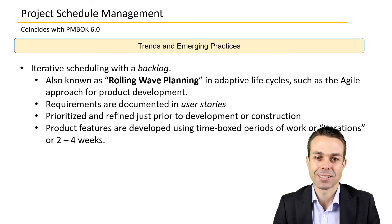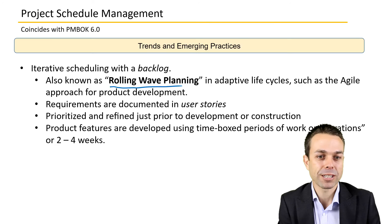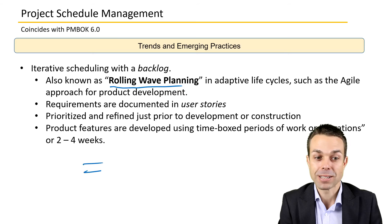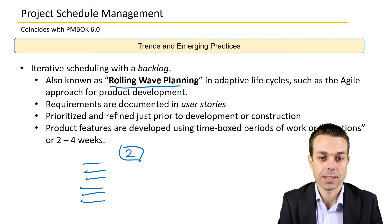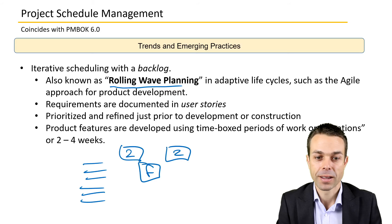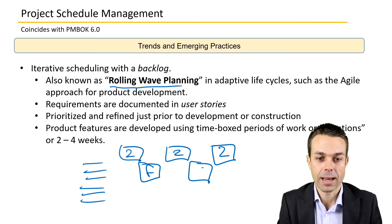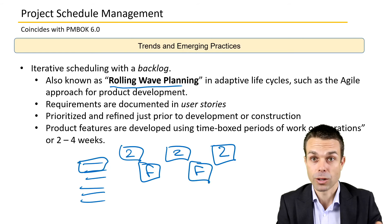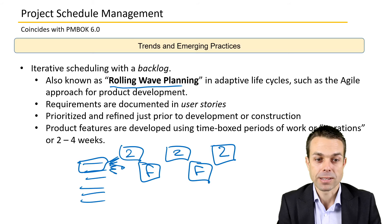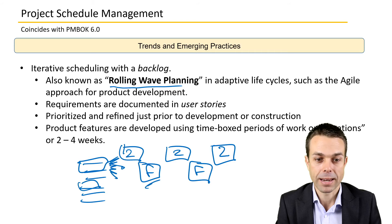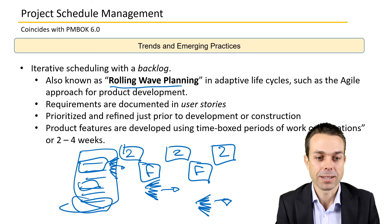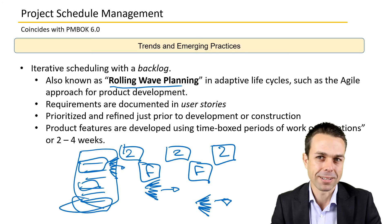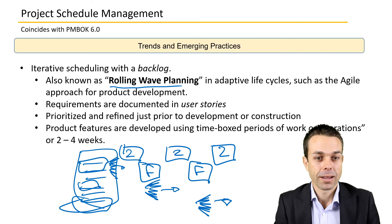Trends and emerging practices include rolling wave planning — iterative scheduling with a backlog. We have a backlog of work representing our activities, and we have iterations of around two weeks. Every two weeks we want to be delivering a feature, taking one or two backlog items that will deliver that feature, planning it out in more detail right before the iteration begins. Initially we have a high-level idea, but right before we do the work we get into the nitty-gritty planning — that's rolling wave planning.